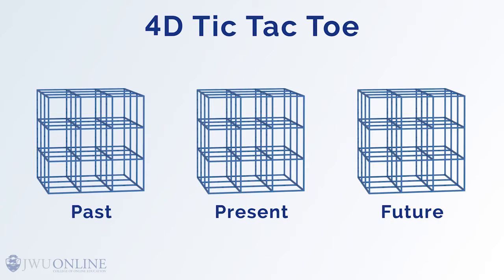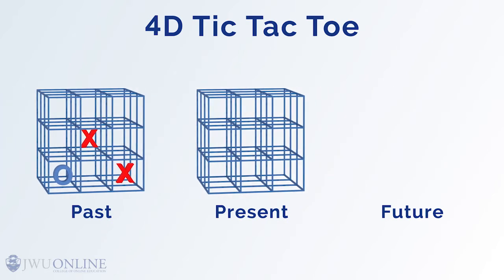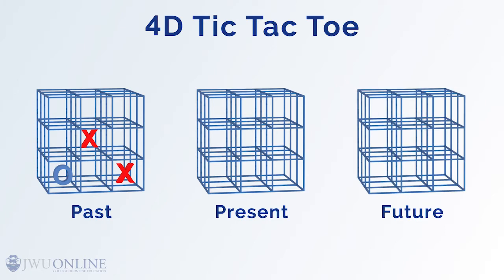Well, the rules will be something like, you can choose any variable space in the present cube and try to win on three planes in that space. But after three successive turns, each cube shifts backward in time. Meaning, the future cube is now the present cube, the present cube becomes the past cube, and the old past cube goes away, and a new future cube is introduced.